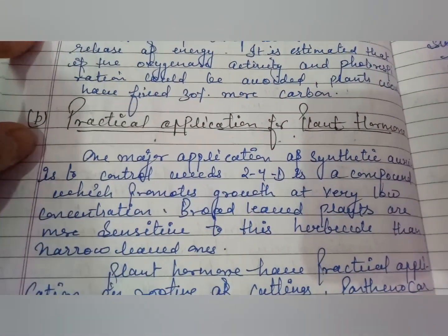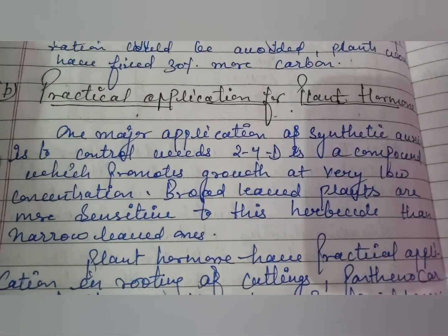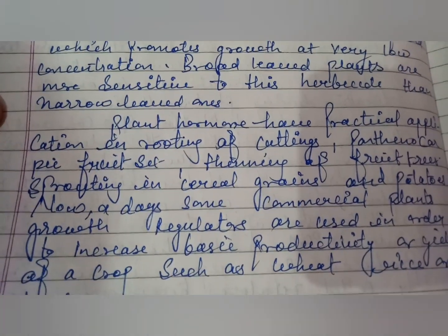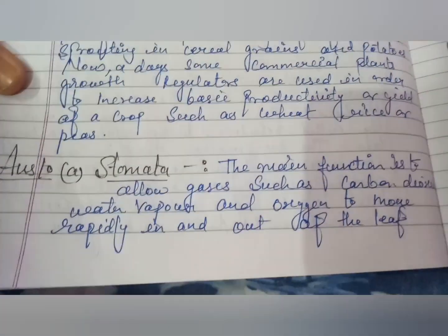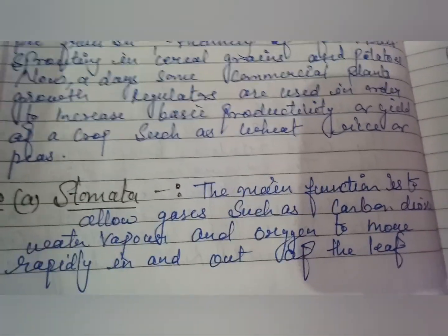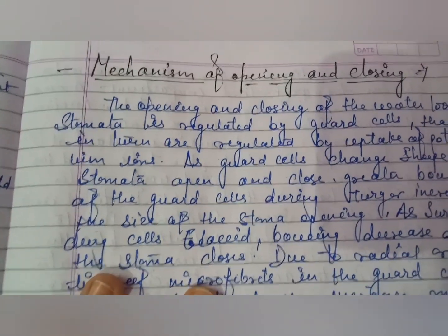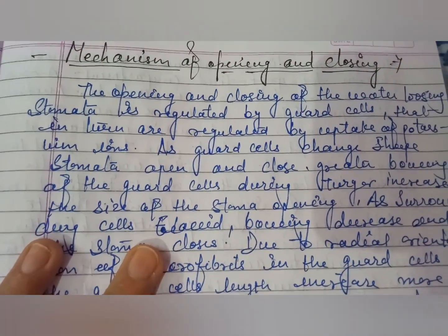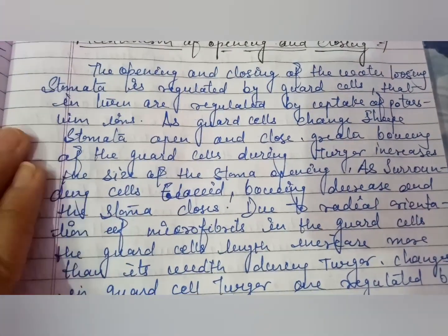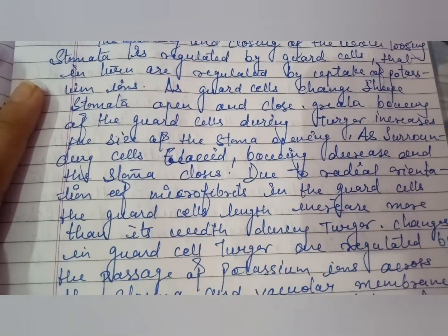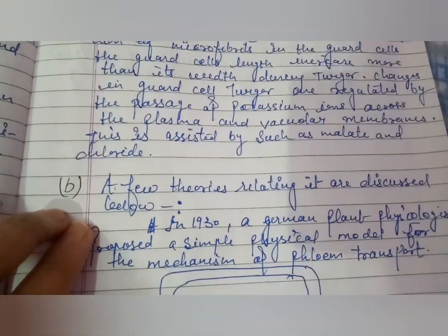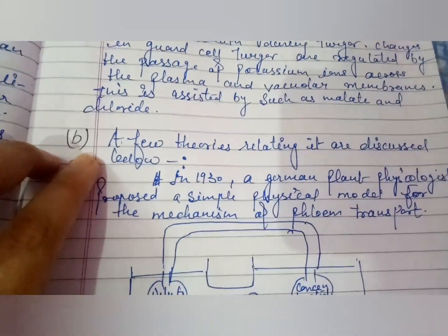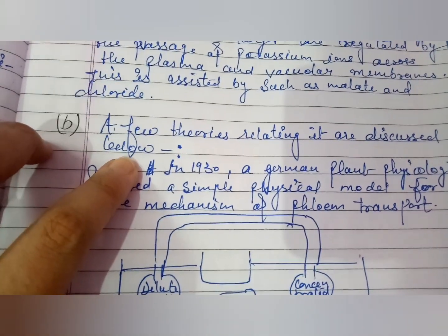Answer nine B covers the practical application of plant hormones. Answer ten A covers the main functions of stomata, including the mechanism of opening and closing. There are also some theories about phloem translocation.